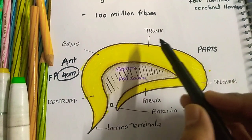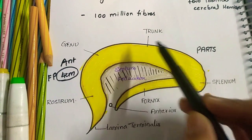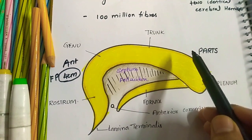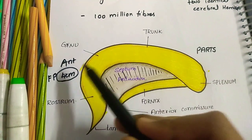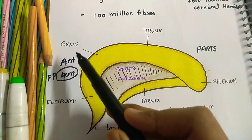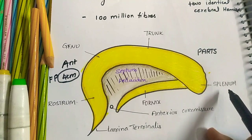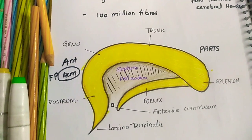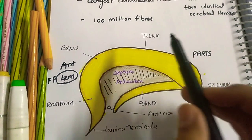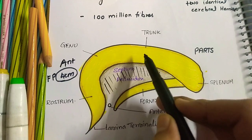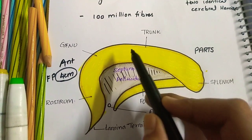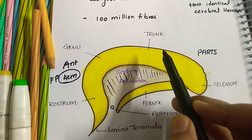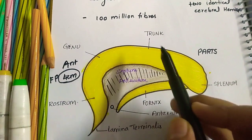The trunk is the main middle part of the corpus callosum that lies between the genu and the splenium. The trunk contains fibers that connect the two parietal lobes.